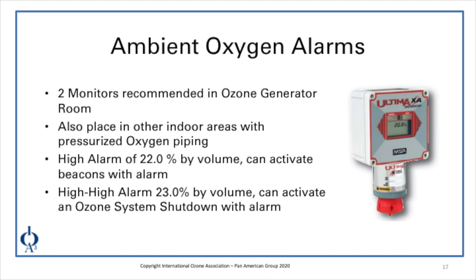Within ozone facilities, it's important to have monitors in appropriate locations to notify us in the event of oxygen leaks. The recommendation is that two monitors be placed within the ozone generator rooms and also placed in other indoor areas where pressurized oxygen piping occurs. A high alarm to indicate an enriched environment occurs at 22% by volume, which can activate beacons with alarms. A high-high alarm at 23% by volume can activate an ozone system shutdown with alarm, and typically will trigger an isolation valve to close back at the liquid oxygen storage tank.